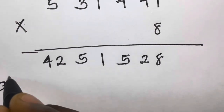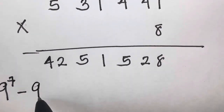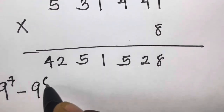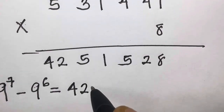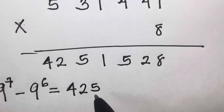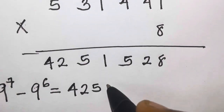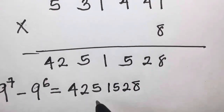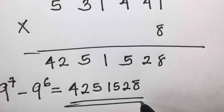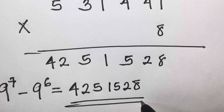So therefore we can now declare that 9 raised to power 7 minus 9 raised to power 6 equals 4,251,528. Thank you for watching. I hope you enjoyed this video. Please like and leave a comment, and don't forget to share with your friends and subscribe to my channel. See you in my next video, bye.